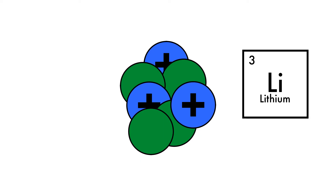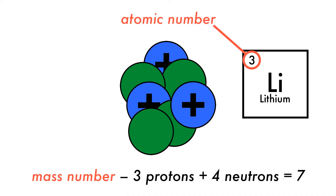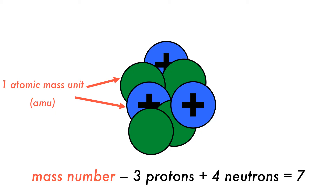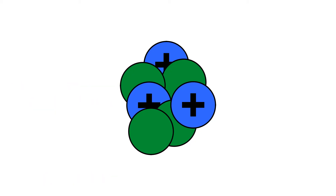The atomic number of lithium is three, so we know that there will always be three protons in the nucleus. To get the mass number, we add the number of protons to the number of neutrons, because they have approximately the same mass of one atomic mass unit. Here, the mass number of lithium is seven. If an atom has three protons and four neutrons, giving it a mass number of seven, we will call this lithium-7, where seven is the mass number.